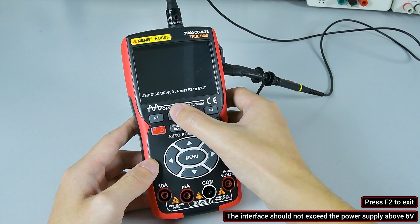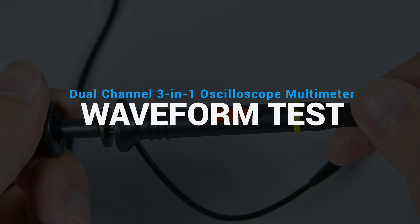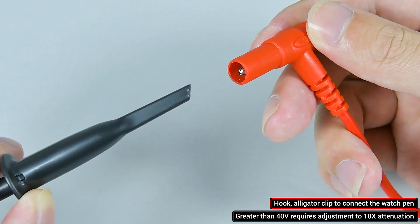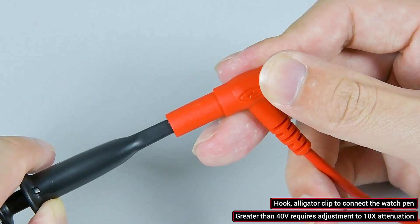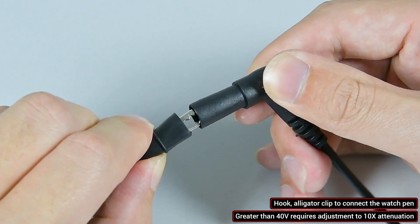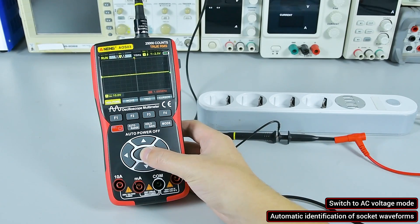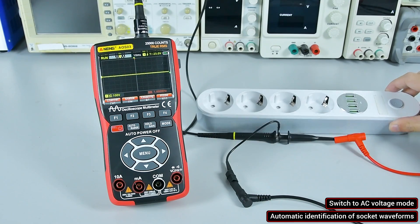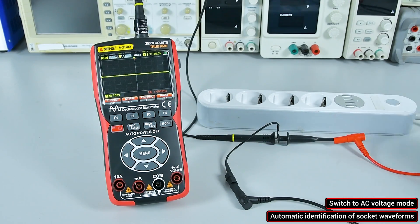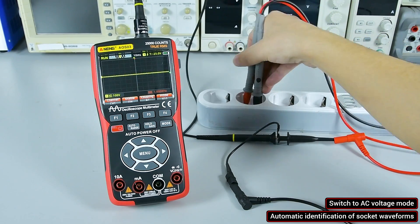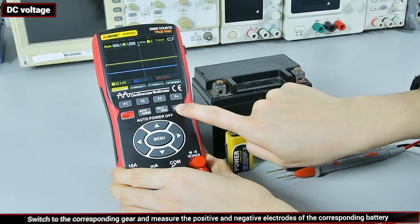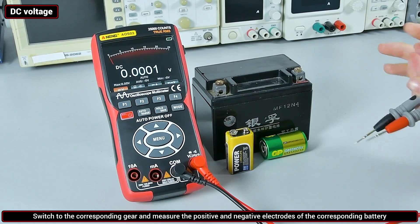Press F2 to exit. Measure the socket waveform. Hook alligator clip connected to the corresponding watch pen. Greater than 40V requires adjustment to 10x attenuation. Switch DAC voltage mode. One click automatic identification of socket waveform.